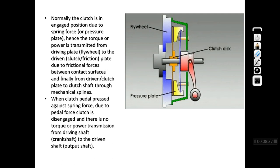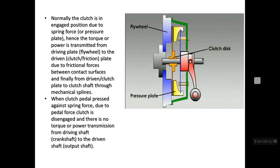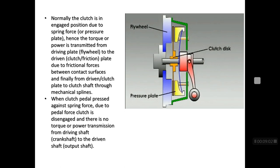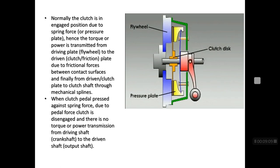When we press the lever we disengage the flywheel from the friction plate, allowing gear changes. Under normal power transmission the friction plate is engaged against the flywheel with the help of the pressure plate. Normally the clutch is in the engaged position due to spring force, and torque and power is transmitted from the driving side — that is the flywheel — to the driven side — the friction plate — because of frictional forces.